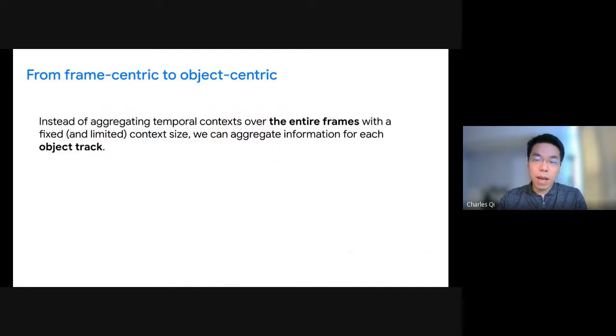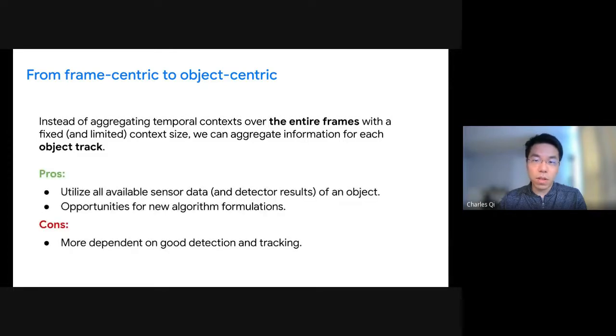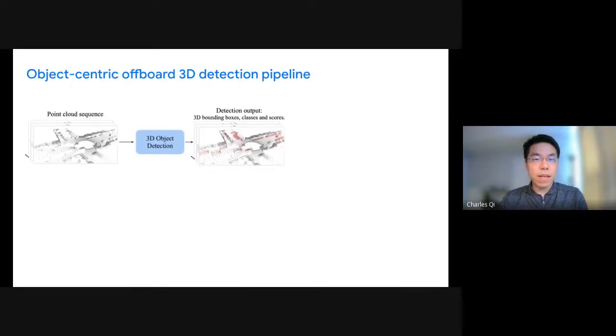The underlying cause for this inefficiency is that we aggregate information across the entire frames. Some objects may appear in up to 100 frames, while some other may only appear in a few. However, setting a fixed frame contact size cannot adapt to different objects. To address this issue, instead of aggregating temporal context over the entire frames, we can aggregate information for each object separately. This is turning from a frame-centric viewpoint to an object-centric viewpoint, such that we can leverage all sensor data captured for an object. This also opens doors for new algorithm formulations, as we will see shortly. The only downside seems to be that we will need to rely on detectors and trackers to collect object tracks. However, with fast advances in detection models and the tracking techniques as presented in this workshop, we believe this is not going to be a bottleneck.